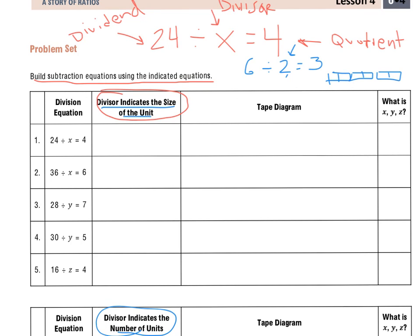if we're talking about the number of units, it would be two groups, not two in each group. And I know that that seems a little confusing at first, but once we go through one or two of these questions, you'll see the difference between the size of the unit and the number of units.